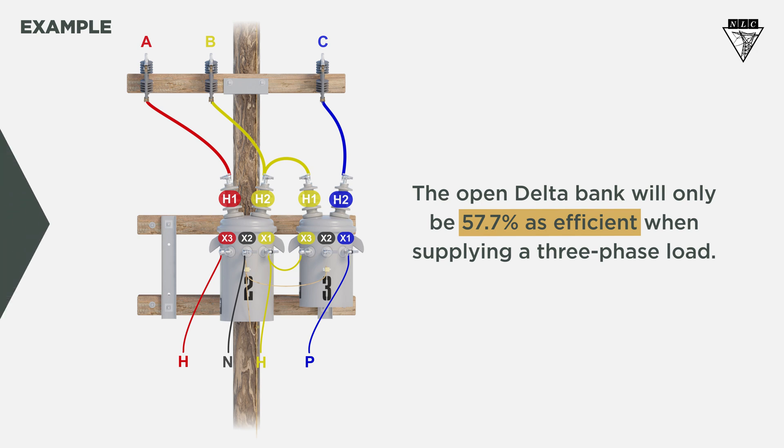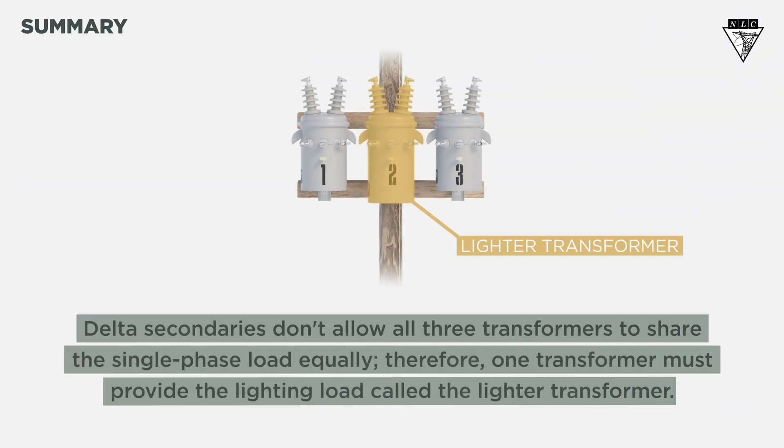So, what did we learn? Delta secondaries don't allow all three transformers to share the single phase load equally. Therefore, one transformer must provide the lighting load, called the lighter transformer.